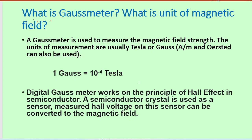What is a Gauss meter and what is the unit of magnetic field? A Gauss meter is used for the measurement of magnetic field. Gauss and Tesla are the units for magnetic field — Gauss is the smaller unit and Tesla is the larger unit; one Gauss equals 10⁻⁴ Tesla. The Gauss meter contains a semiconductor crystal, and due to the Hall voltage generated in a magnetic field, we can detect the magnetic field by converting this Hall voltage into a magnetic field reading.